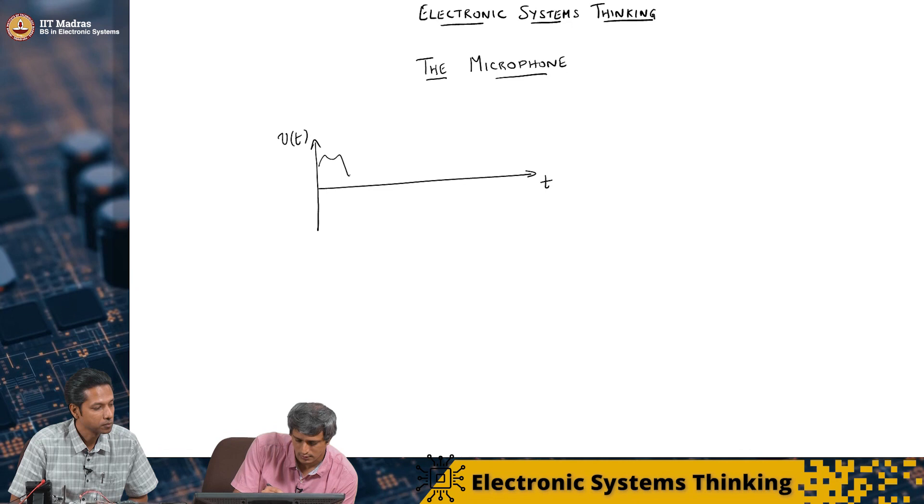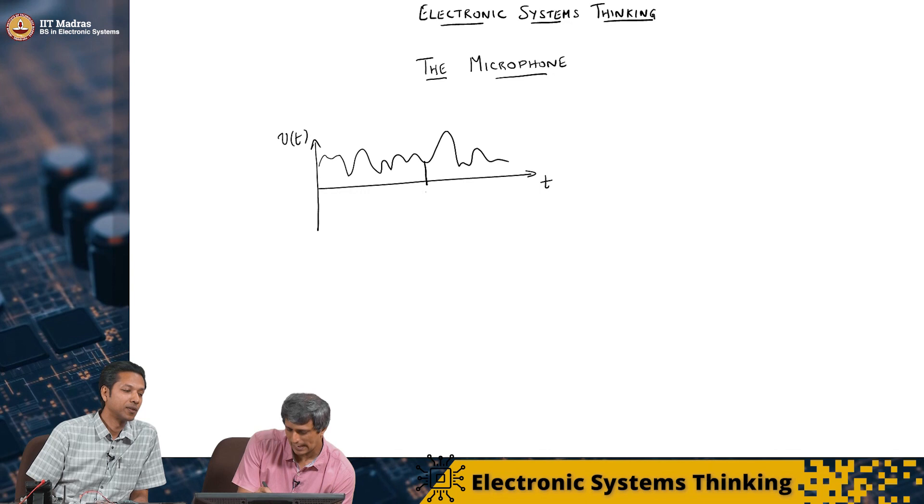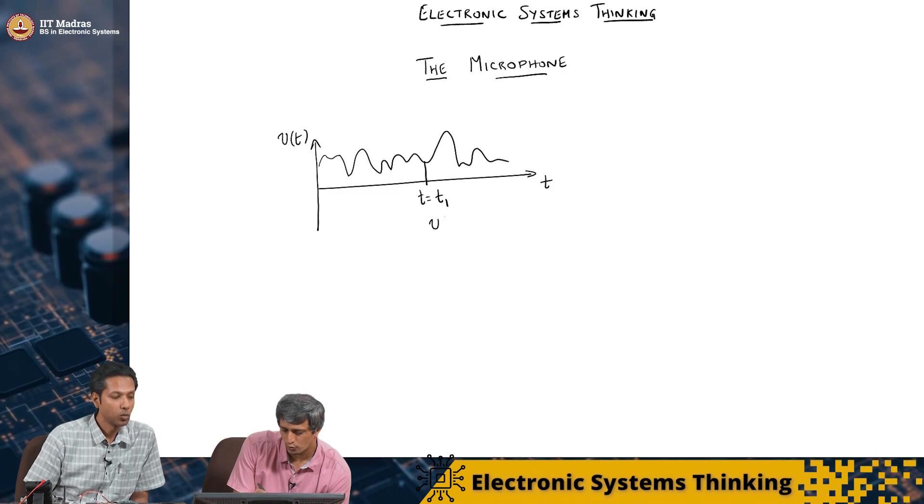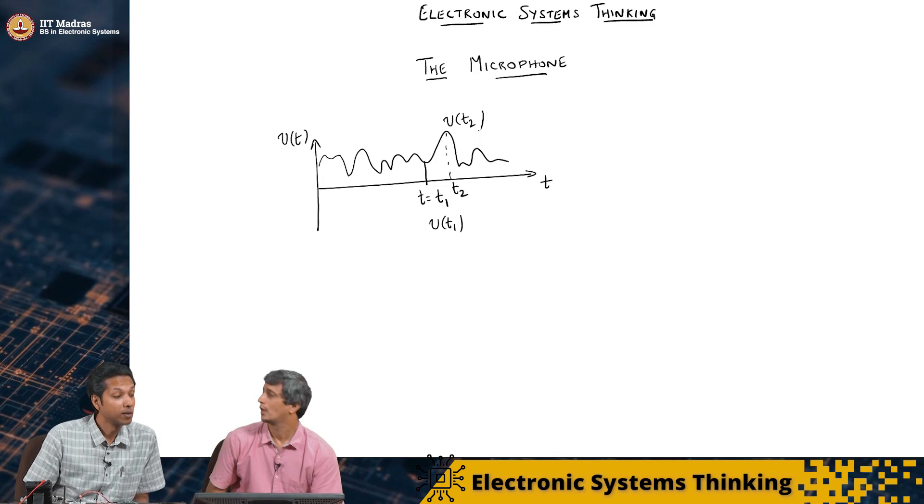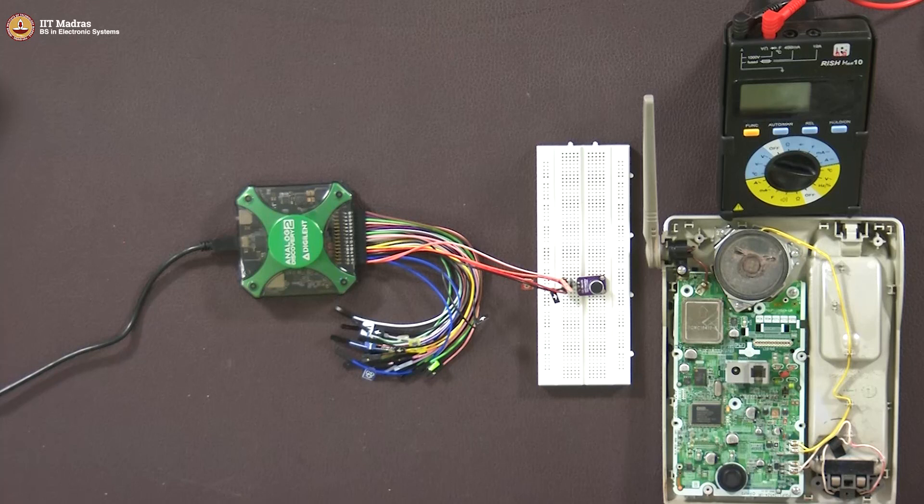So this microphone output is some weird thing like this. And if you sample it at a particular time instant t equal to t1, the amplitude is V of t1. But if you sample it elsewhere at t2, then the amplitude is V of t2. So if there is a way to see the actual signal here when we speak, it may look something like that.